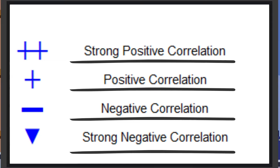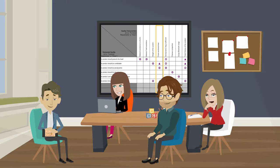And the symbol arrow down is for a strong negative correlation. I think that reducing weight can have a negative correlation with increasing resistance.